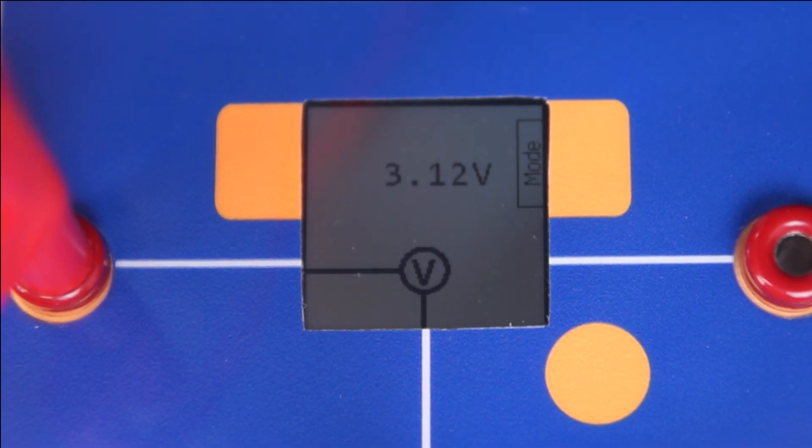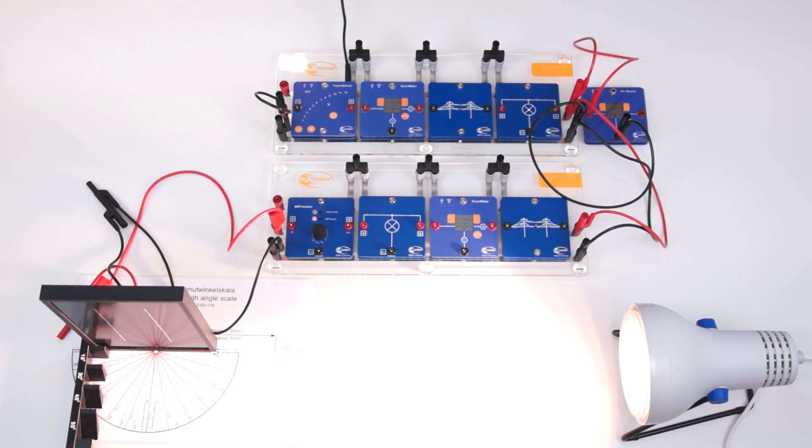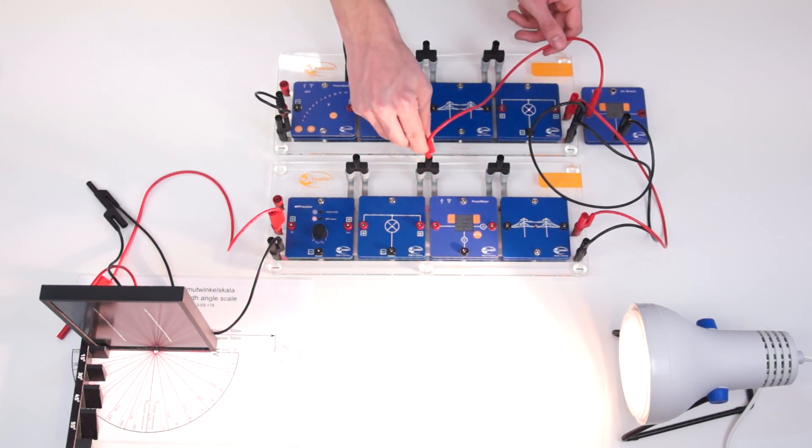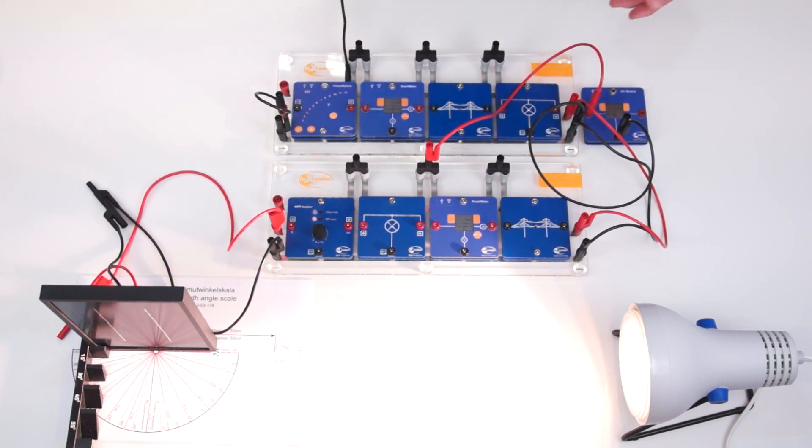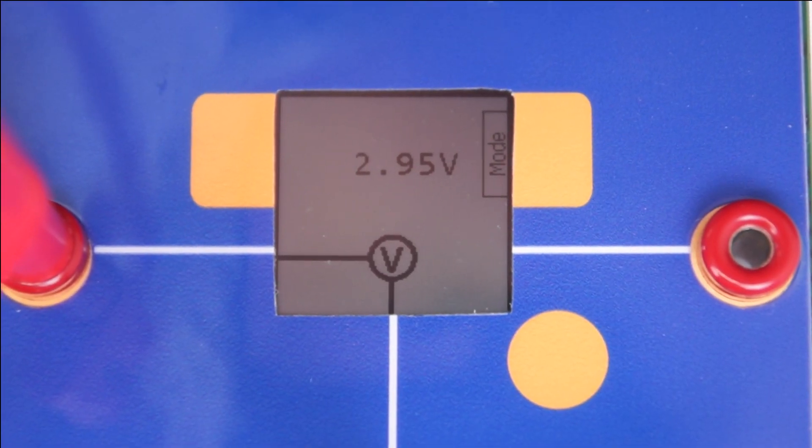We now connect the AV module to the first household and measure the local voltage. It amounts to 3.12 volts. We then measure the voltage at the second household.